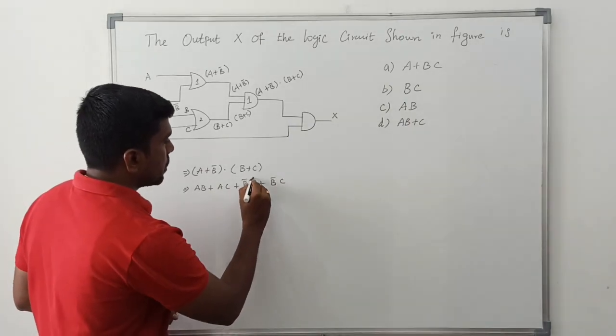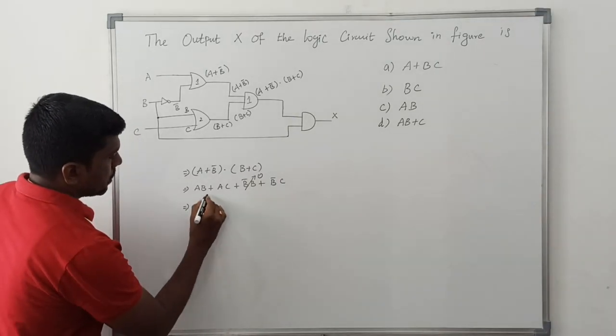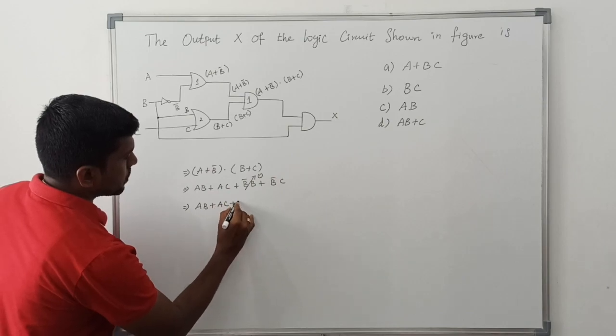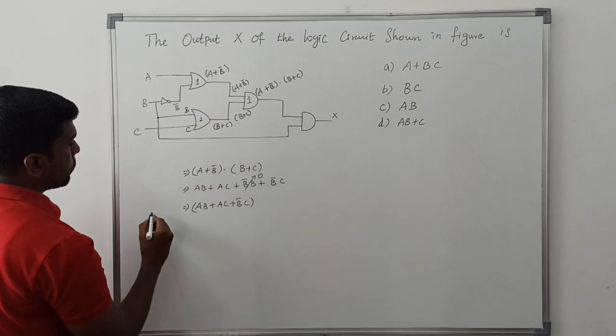B bar dot B in the sense is equal to 0. Then the remaining terms: AB plus AC plus B bar dot C. This is the output of the first AND gate.